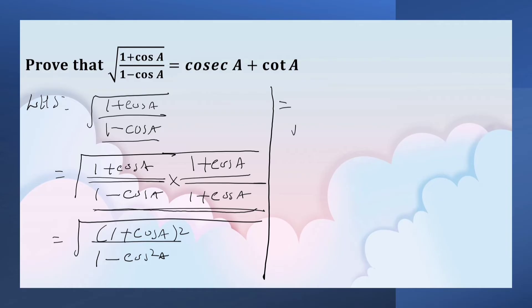Observe in the denominator. It is 1 minus cos square a which is equal to sin square a. By the identity, sin square a plus cos square a is equal to 1. In the numerator, it is 1 plus cos a the whole square.